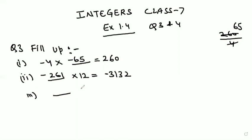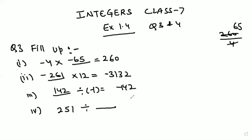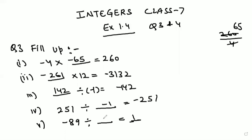Third part: 142 divided by what number so as to get minus 142? It will be divided by minus 1. Fourth part: 251 divided by what number so as to get minus 251? It will also be divided by minus 1. Fifth part: minus 89 divided by what so as to get 1? Minus 89 divided by minus 89 gives 1.